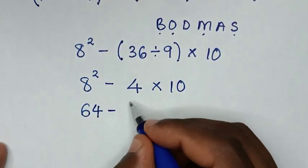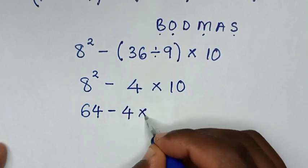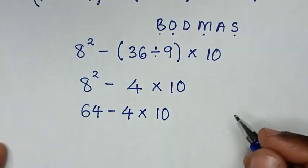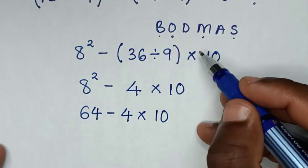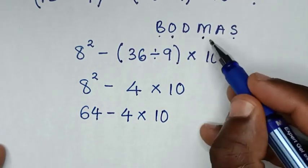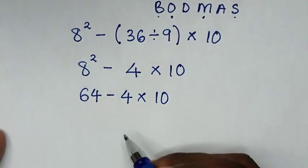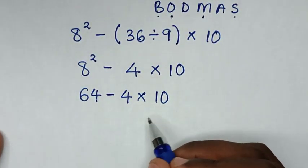Then minus 4 times 10. So after we deal with this order we're going to deal with multiplication, so in multiplication we have 4 times 10 which is 40.